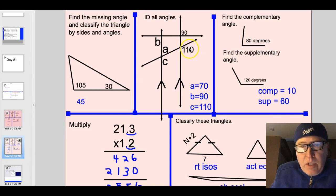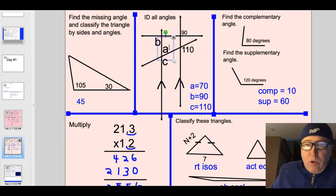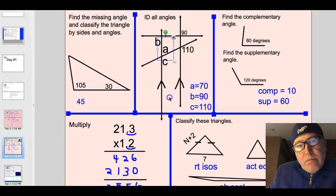If this angle right here is 110 degrees and again these are parallel lines and this is a line that intersects, then c will be 110 degrees and a will be 70 degrees. So these two here are 180 degrees together.